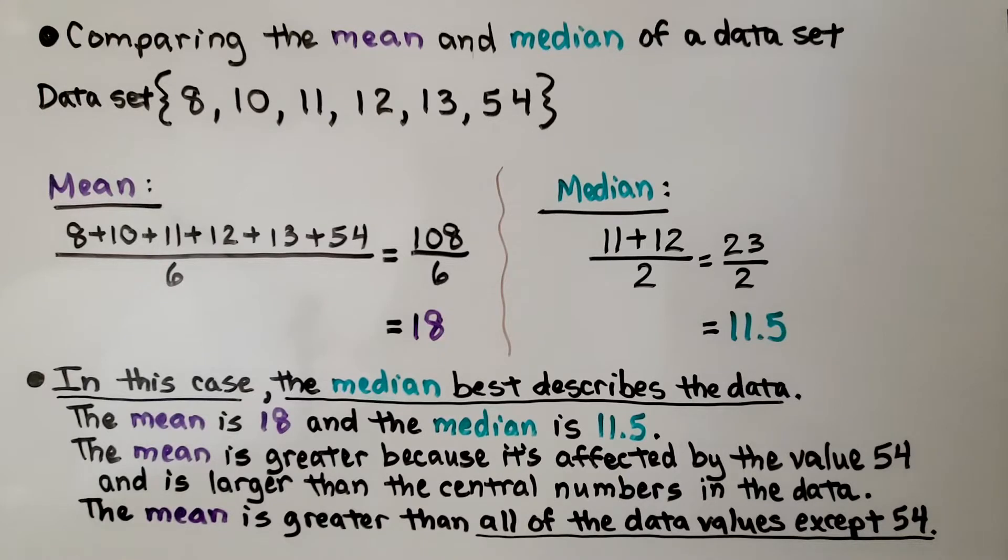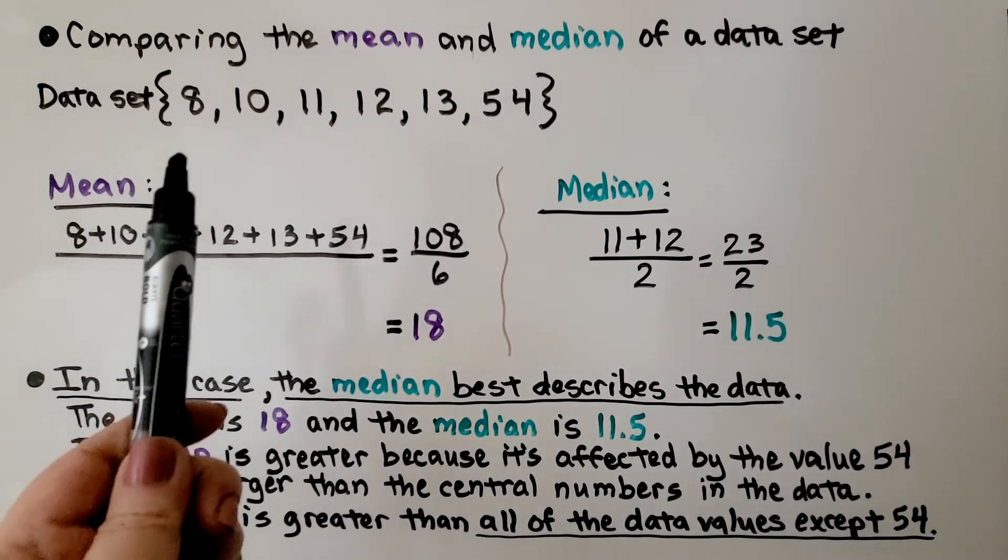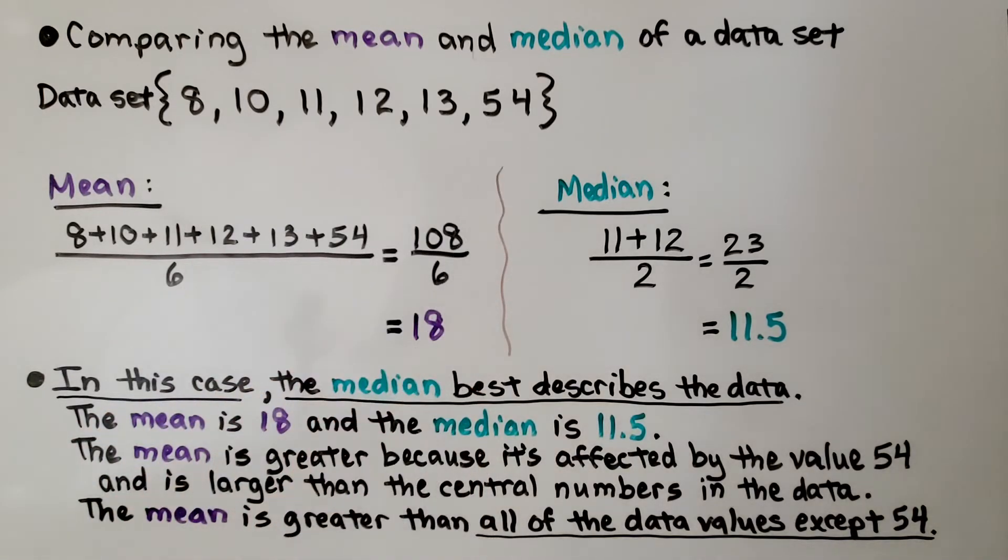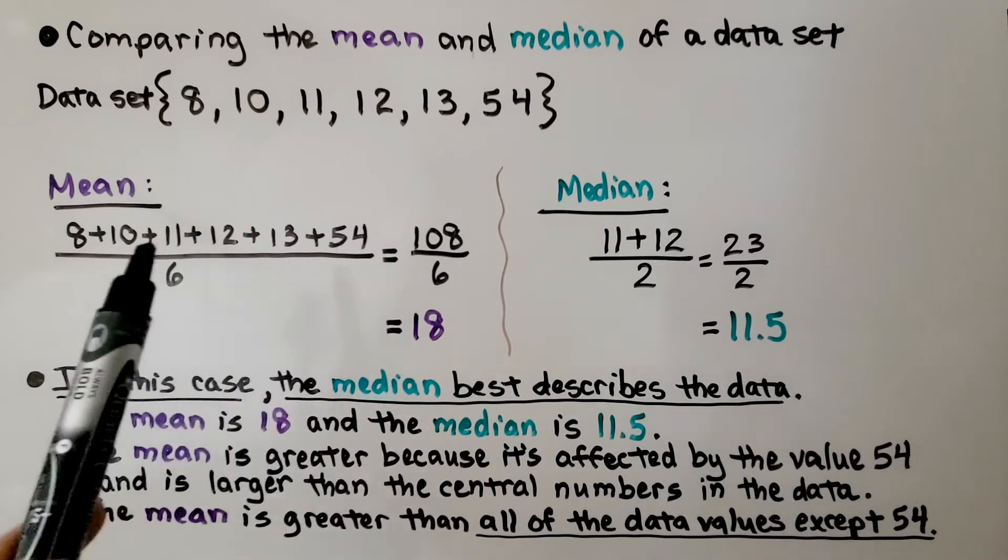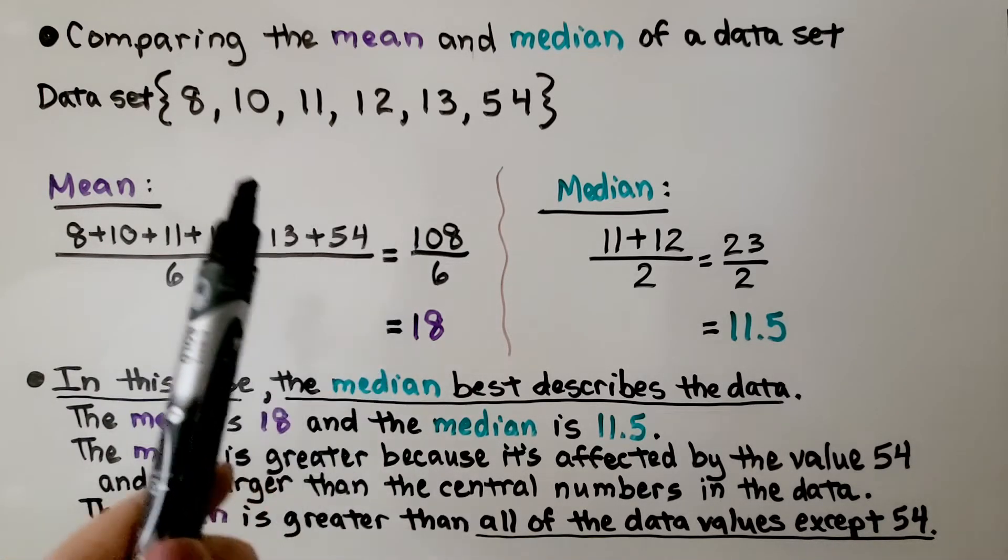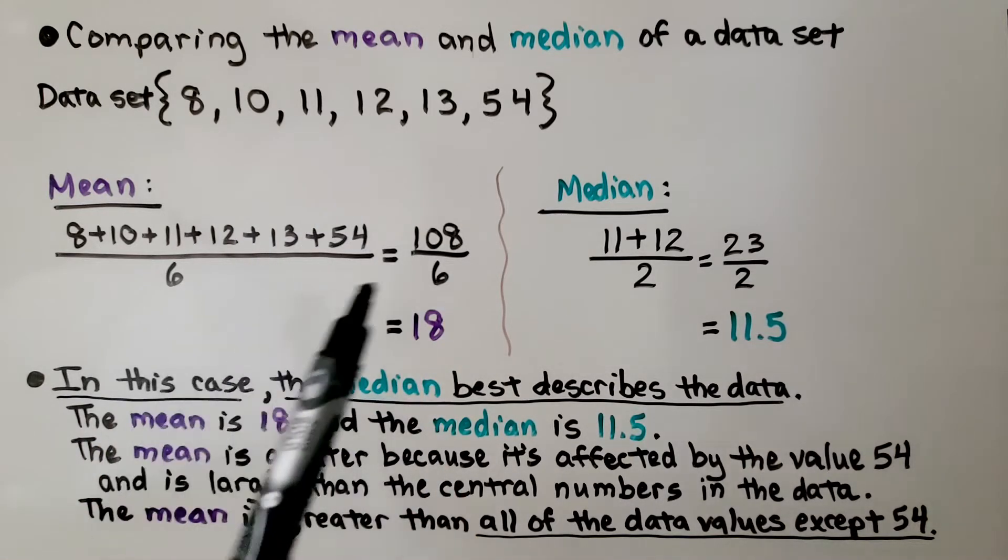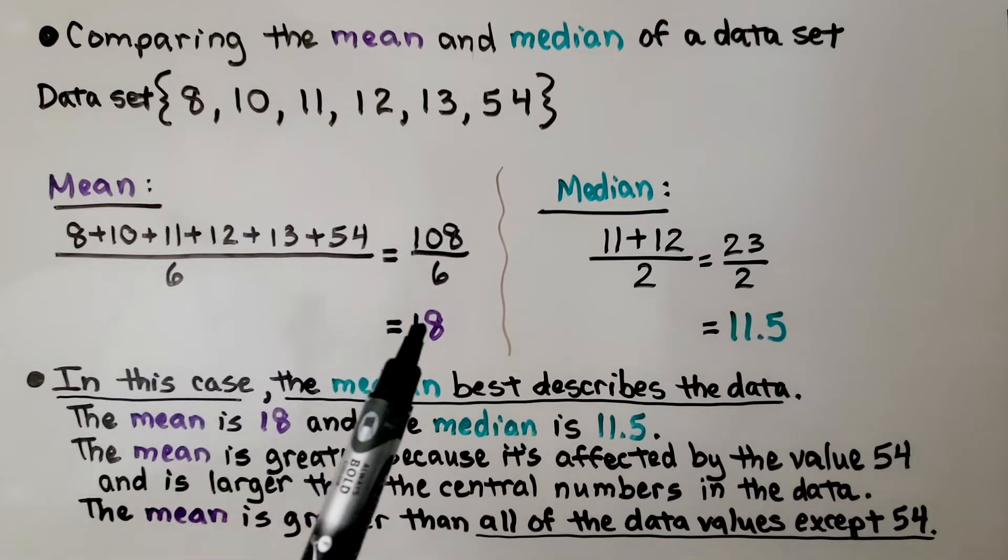So this is comparing the mean and median of a dataset. Here's our dataset: we've got 8, 10, 11, 12, 13, and 54. For the mean, we would add these digits and get 108. There's 1, 2, 3, 4, 5, 6 that we added, so we divide the 108 by 6, we get 18.